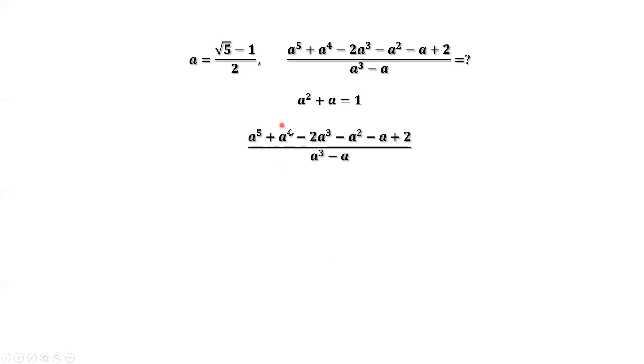The first two terms have a common factor, a to the power 3. We can group these two terms. Then we have a to the power 3 times a squared plus a. We can group these other terms as well.